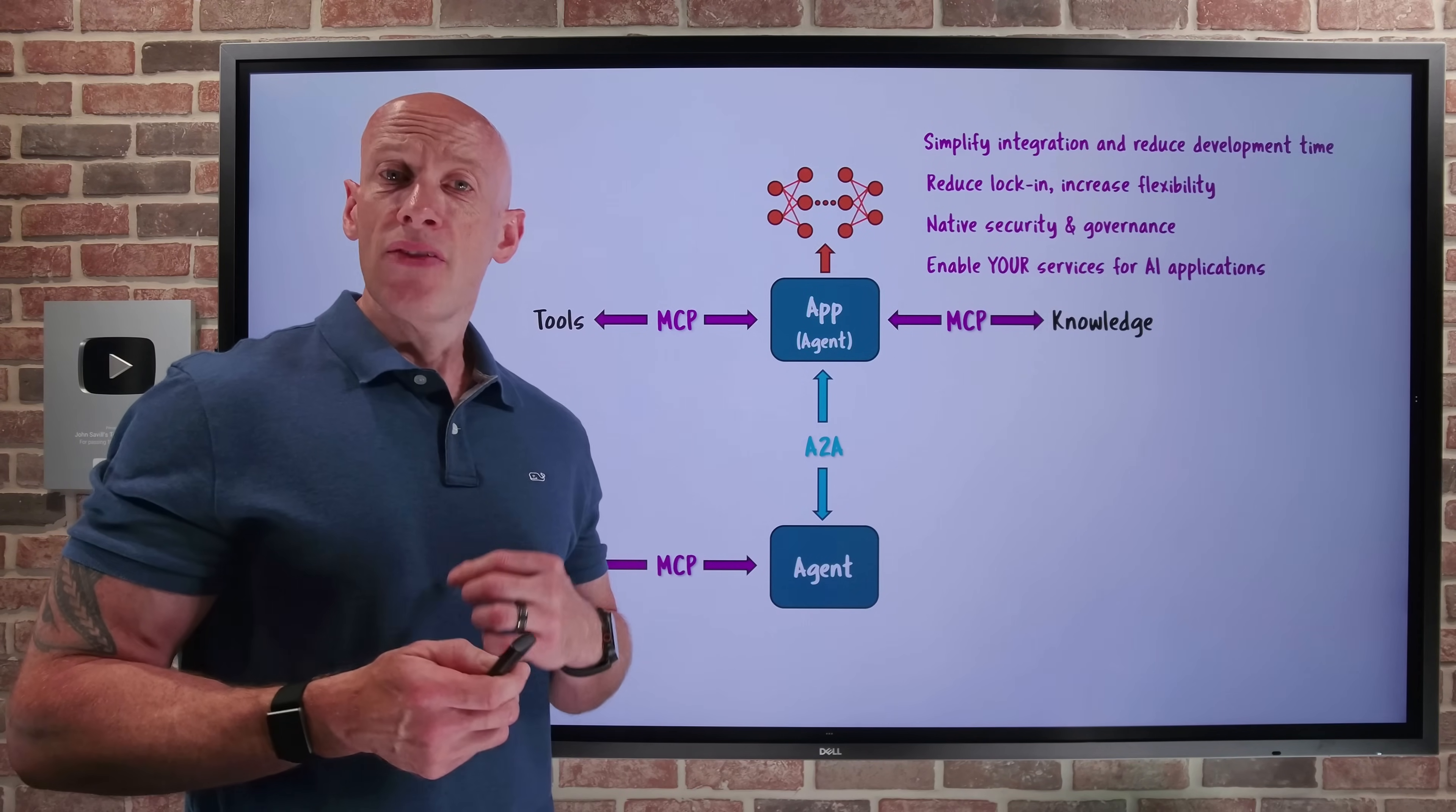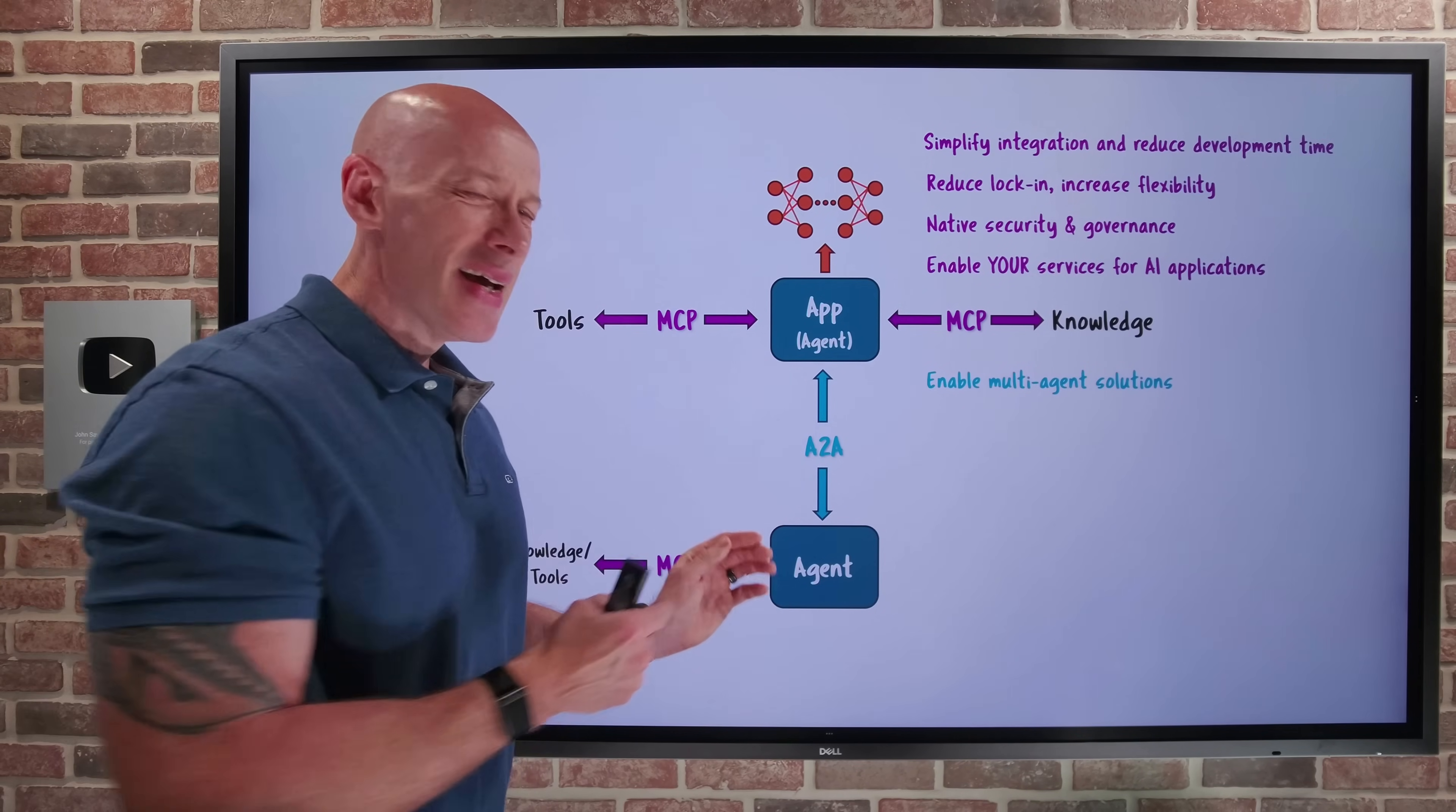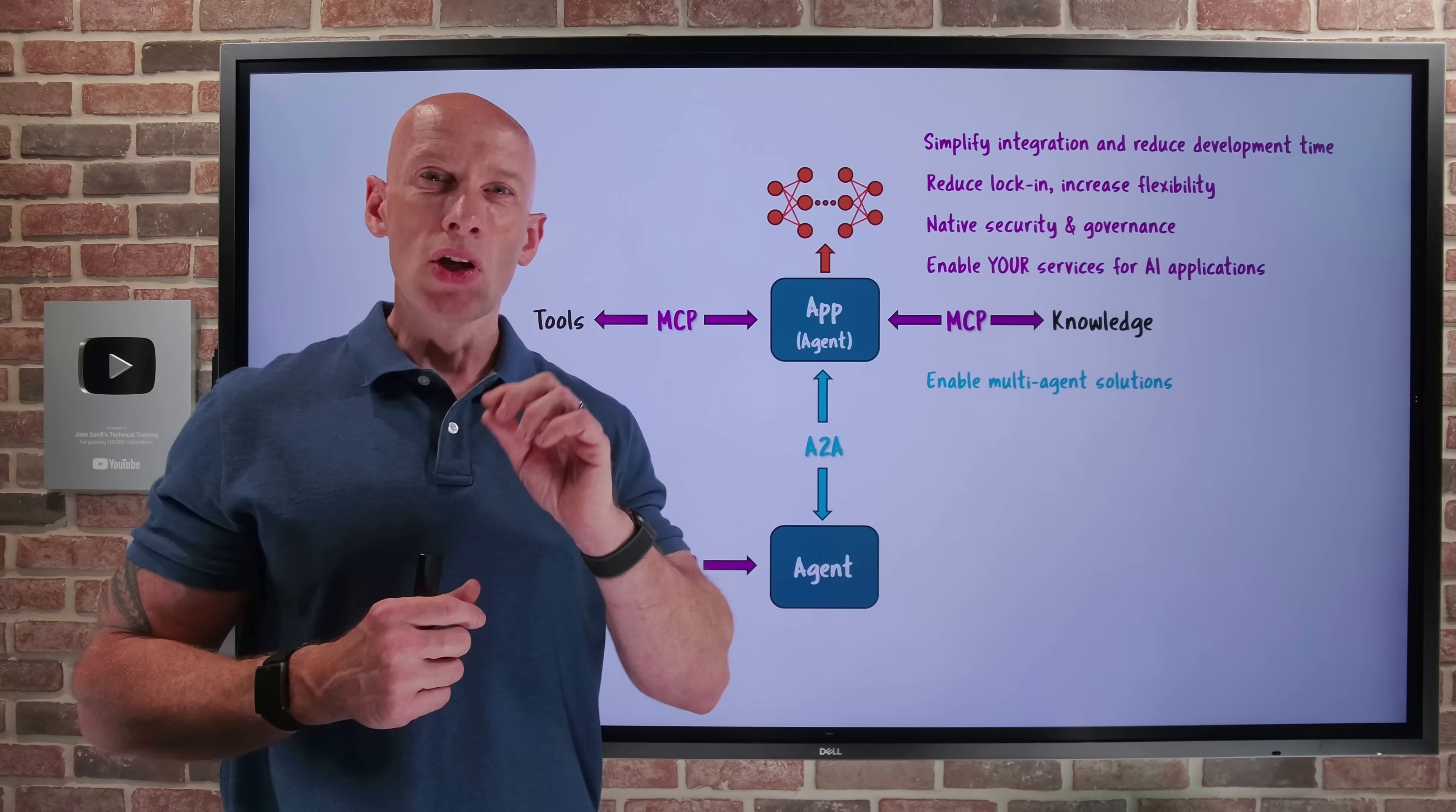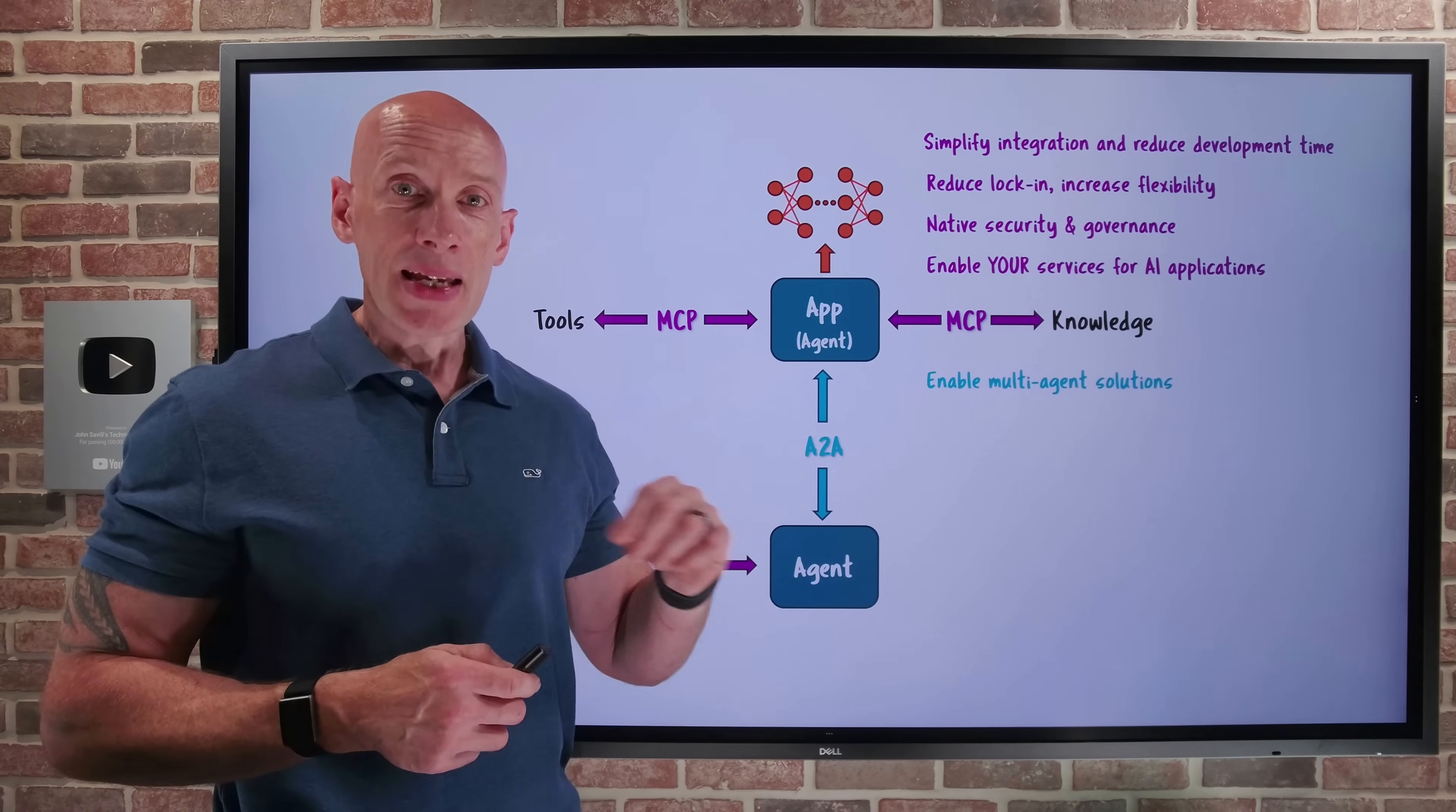And then when I think of A-to-A, well, it enables complex multi-agent capabilities. Agents are best when they are subject matter experts. They have a very singular defined skill. Therefore, in most business scenarios, you're going to need many agents working together. A-to-A enables those agents to learn the abilities of each other and delegate those tasks.